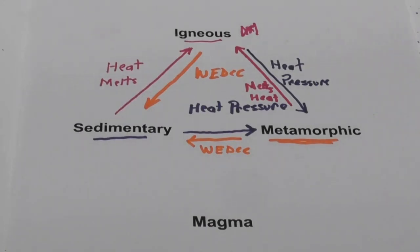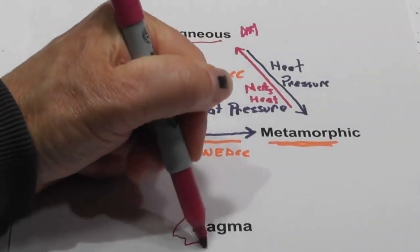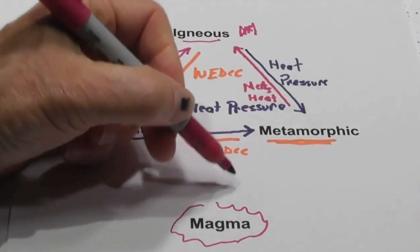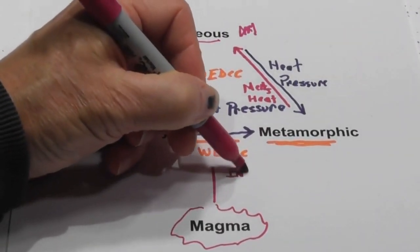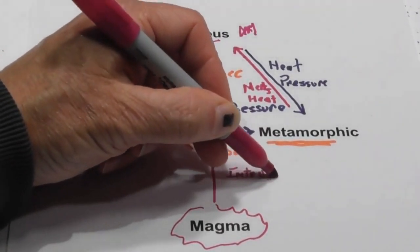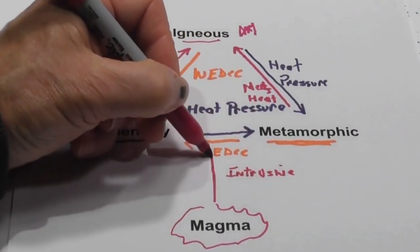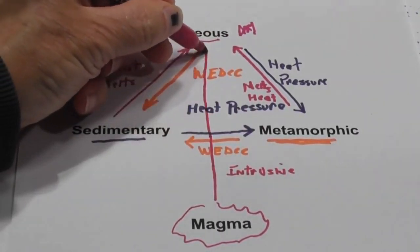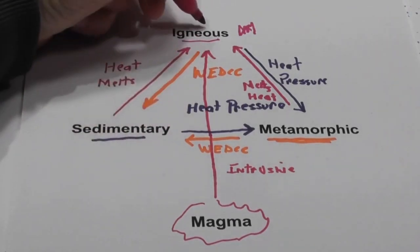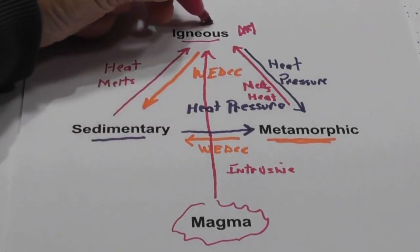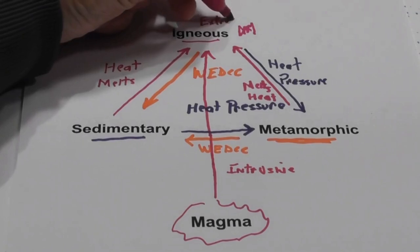And then we have magma, which is molten rock underground. And sometimes it will cool and create an intrusive igneous rock underground. And then sometimes it goes to the surface by uplifting, and that creates an extrusive igneous rock.